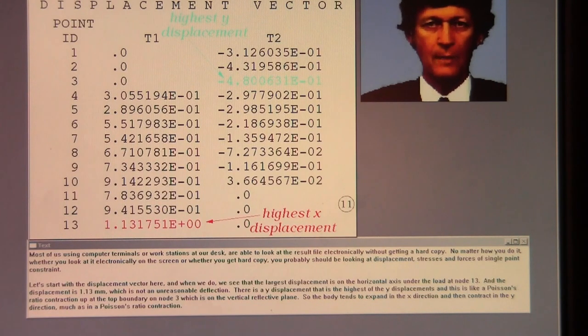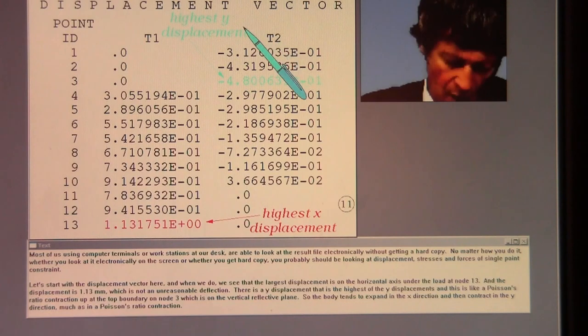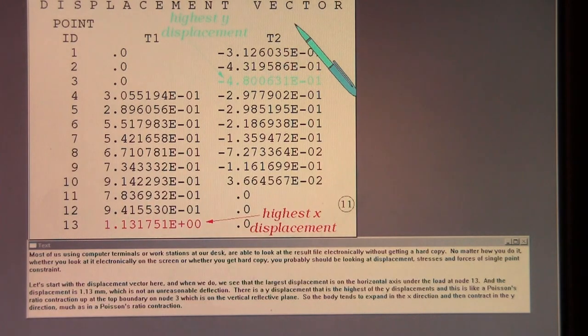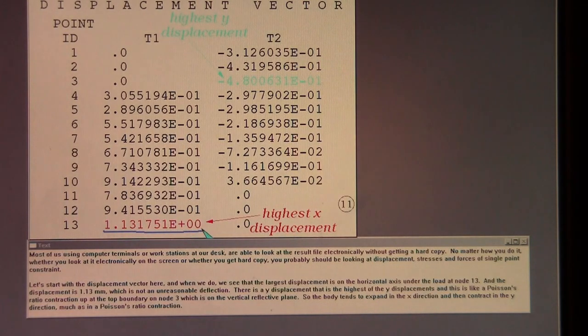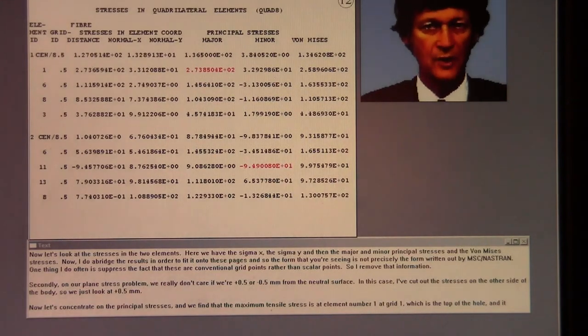Most of us using computer terminals or workstations at our desk are able to look at the result file electronically without getting a hard copy. No matter how you do it, whether you look at it electronically on the screen or whether you get hard copy, you probably should be looking at displacements, stresses, and forces of single point constraint. Let's start with displacement vector here. And when we do, we see that the largest displacement is on the horizontal axis under the load at node 13. And the displacement is 1.13 millimeters, which is not an unreasonable deflection. There is a Y displacement that is the highest of the Y displacements. And this is like a Poisson's ratio contraction up at the top boundary on node 3, which is on the vertical reflective plane. So the body tends to expand in the X direction and then contract in the Y direction, much as in a Poisson's ratio contraction.